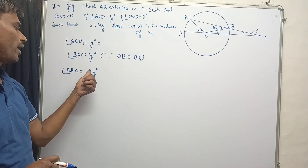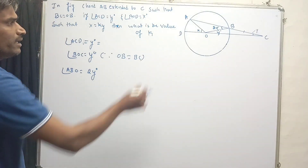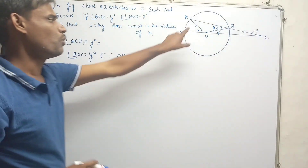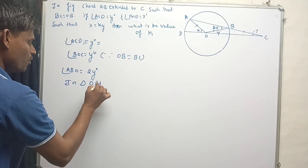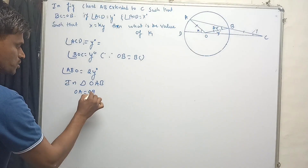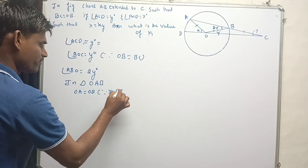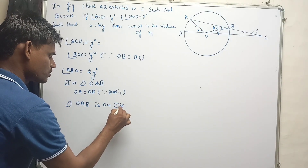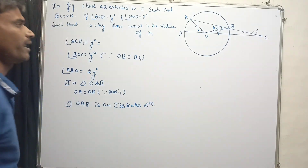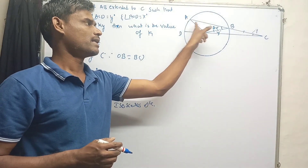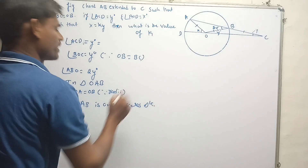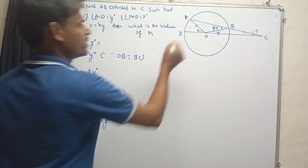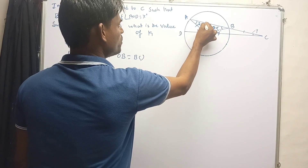The value of angle ABO is therefore two times y degrees. Then again, in triangle OAB, OA and OB are the radii of the circle, so OA equals OB. Triangle OAB is an isosceles triangle, and angles opposite to equal sides are equal, so angle OAB is also equal to two times y degrees.